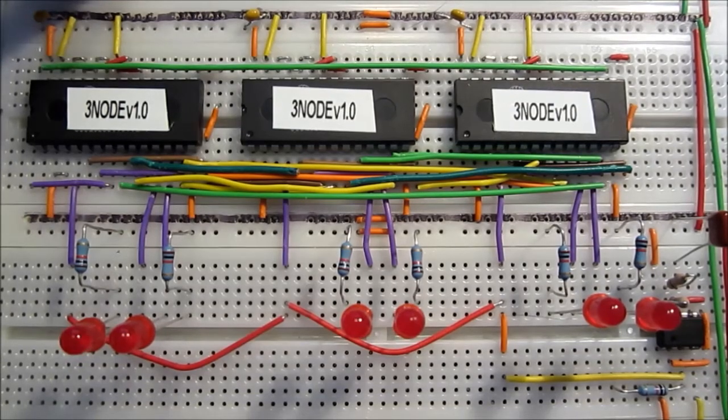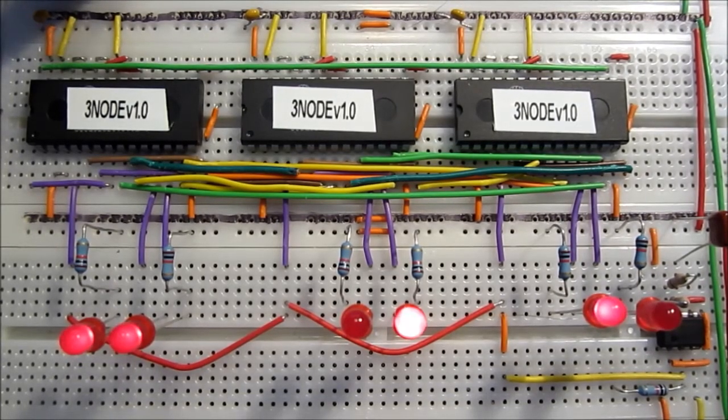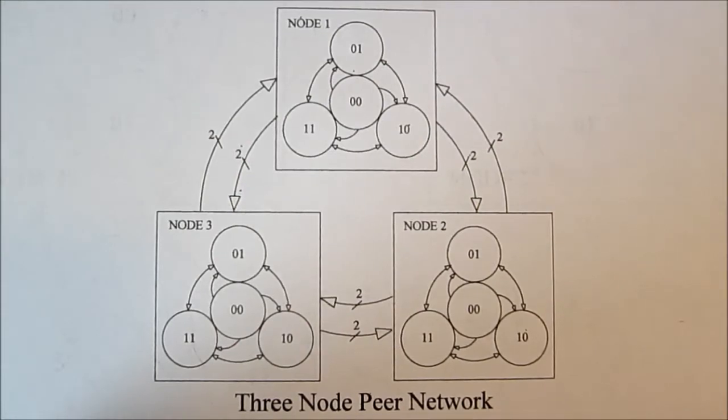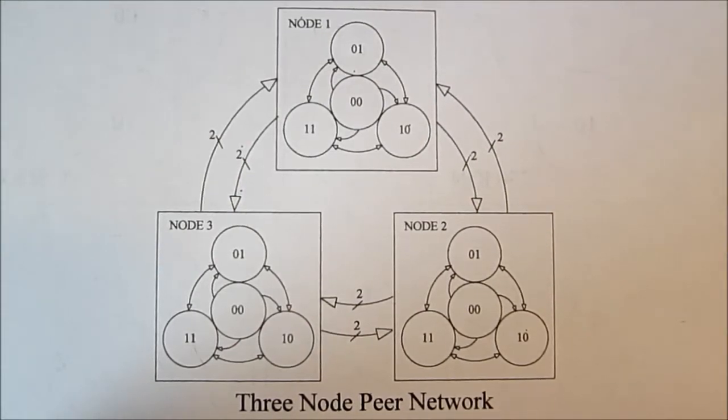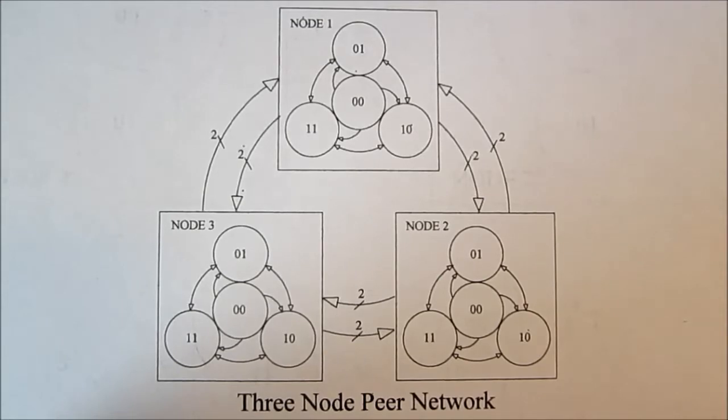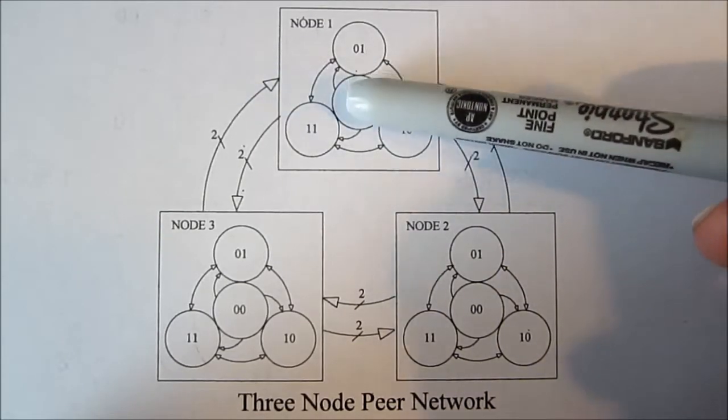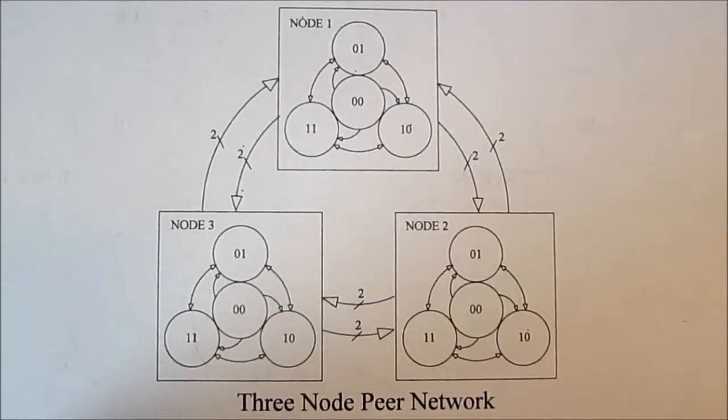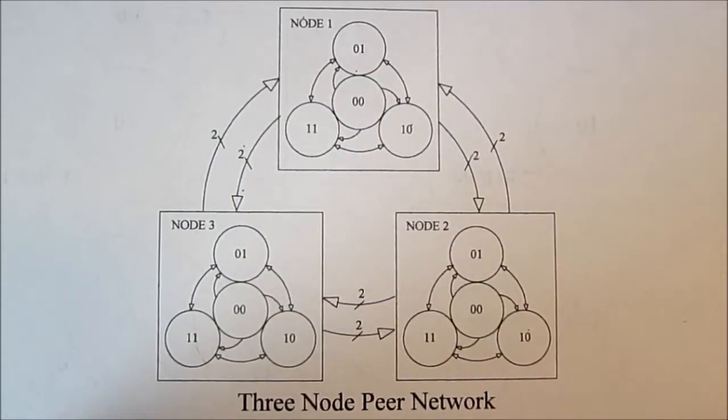So here is the underlying architecture concept behind the design. Each one of those three nodes that you saw on the breadboard is a four-state state machine, and they are completely and absolutely identical.